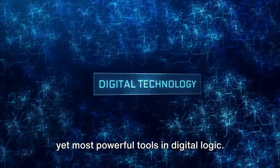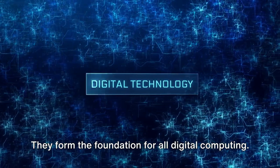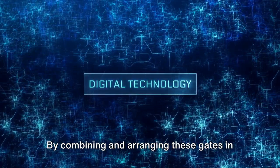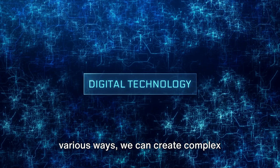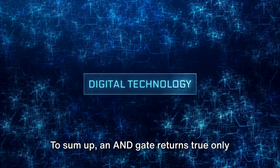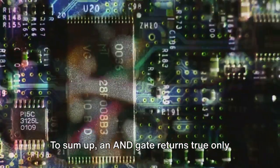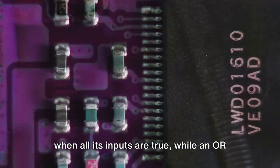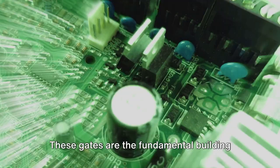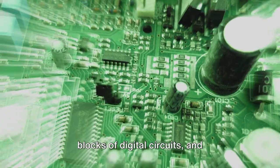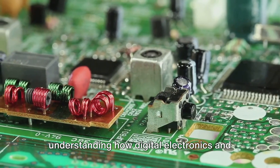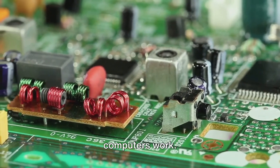These gates, AND and OR, are the simplest yet most powerful tools in digital logic. They form the foundation for all digital computing. By combining and arranging these gates in various ways, we can create complex functions and operations. An AND gate returns true only when all its inputs are true, while an OR gate returns true if at least one of its inputs is true. These gates are the fundamental building blocks of digital circuits, and understanding them is crucial to understanding how digital electronics and computers work.